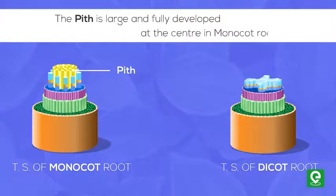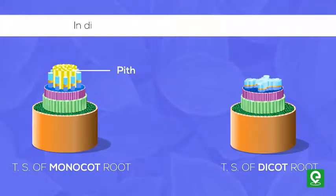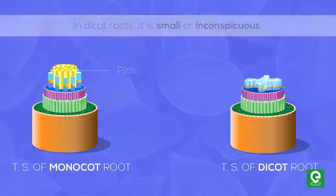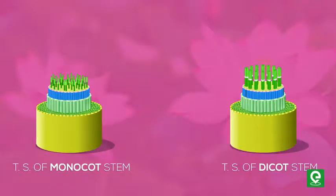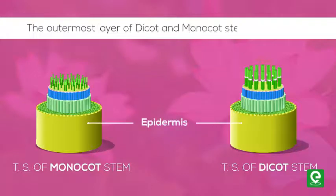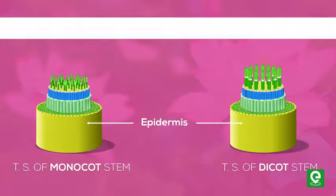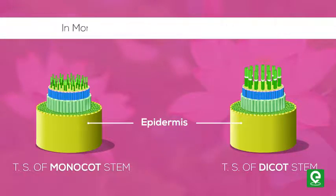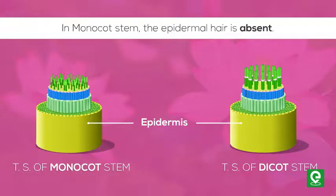The pith is large and fully developed at the center in monocot roots, while in dicot roots it is small or inconspicuous. The outermost layer of both dicot and monocot stem is epidermis. In dicot stem the epidermis forms epidermal hair, while in monocot stem epidermal hair is absent.